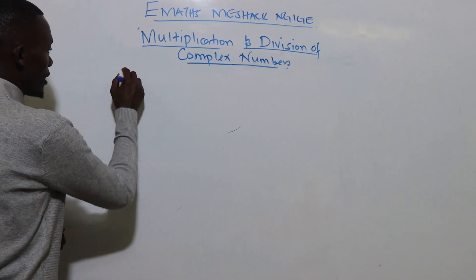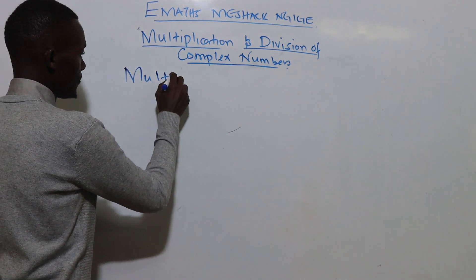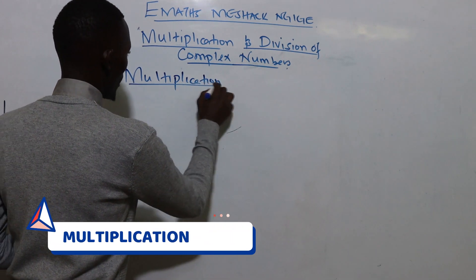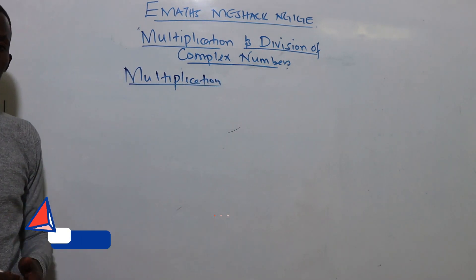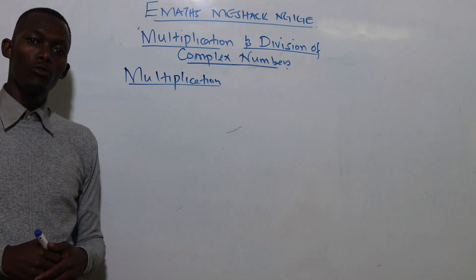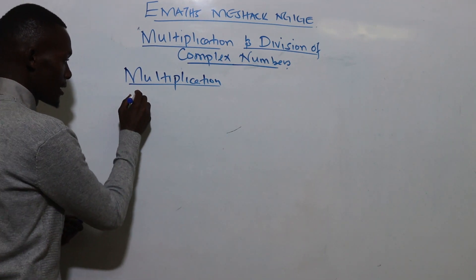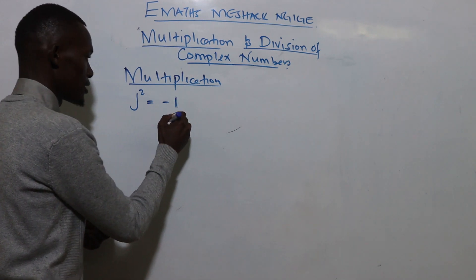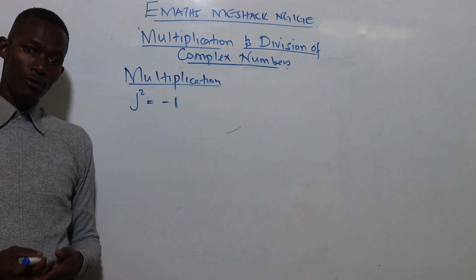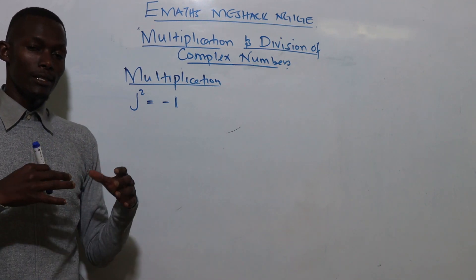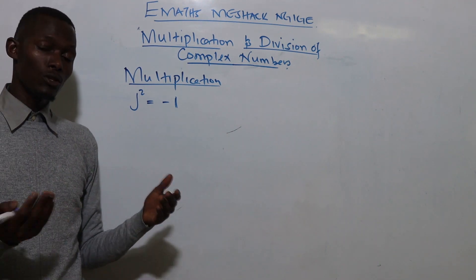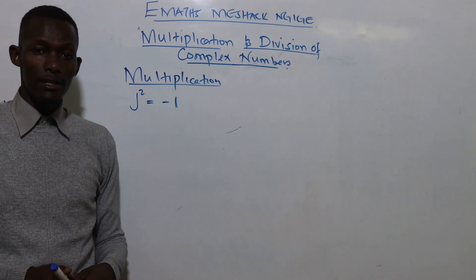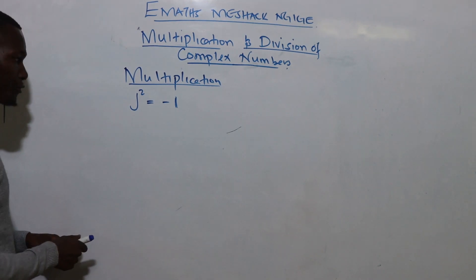As we start multiplication, there is something you need to remember: j squared is given by negative one. We know j is the square root of negative one, therefore j squared — the square cancels out the square root — and you remain with j squared equals negative one.